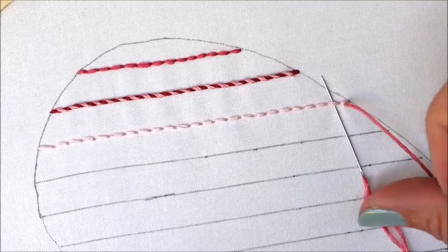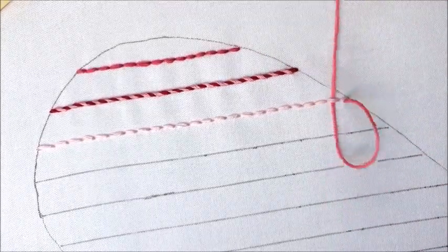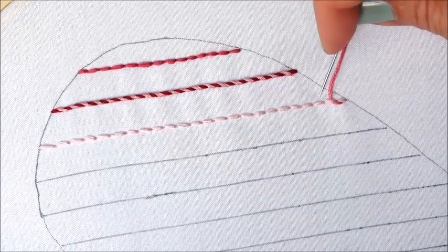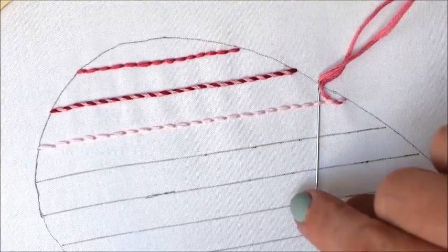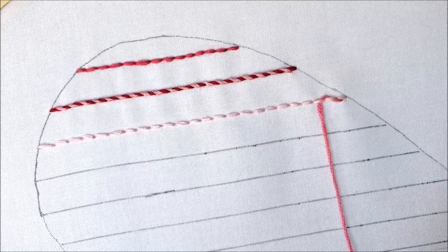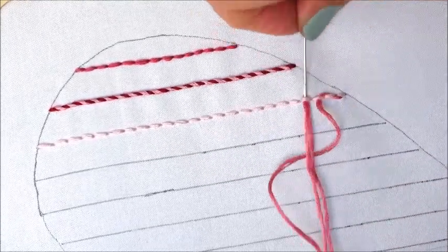Next we'll just be weaving in and out of the stitches. Bring your needle up through the next stitch. When you do this, you're going to go between the fabric and the thread. You're not going to the back side of the fabric. Just slide your needle through the stitch and then pull the thread through.